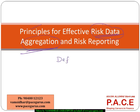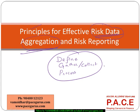Basically, first define what is risk data, then gather or collect the risk data from various sources, do some calculations — the processing aspect of it. This entire risk data aggregation process should help any entity, whether it's a bank or any financial institution, to measure its risk appetite and risk tolerance levels.